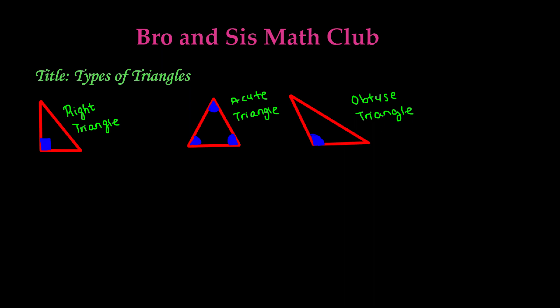Hey guys, welcome back to Barancis Math Club. Today we'll be learning about the different types of triangles. The different types of triangles are distributed into two different categories. The very first category is based on the different angles of a triangle, and the second category is based on the measurements of the size of the triangle. Each of these categories has three triangles.